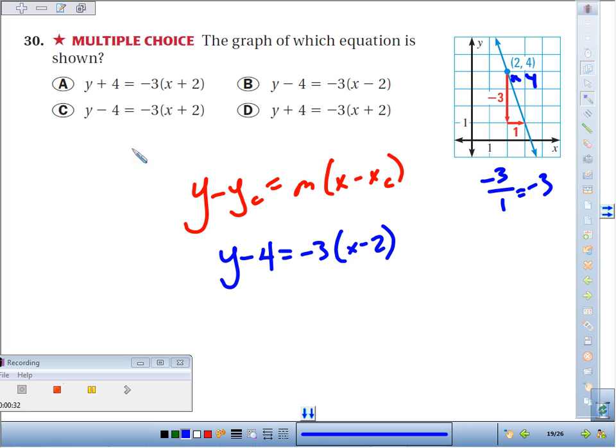Is that one of our options? y minus 4 equals negative 3 times x plus 2. y minus 4 equals negative 3 times x minus 2. Hey, there it is. We got lucky.